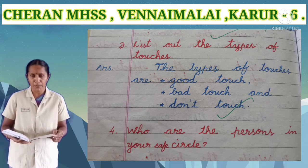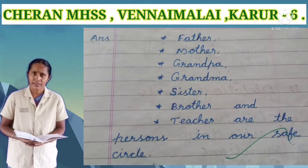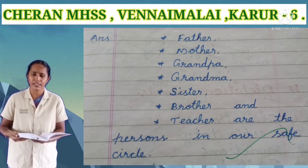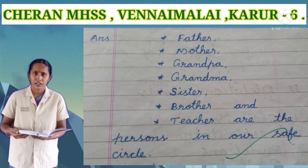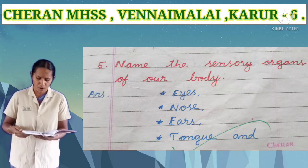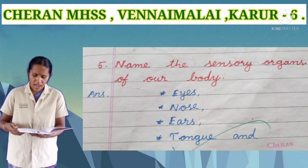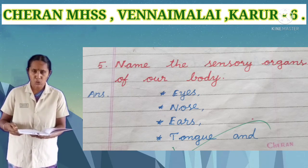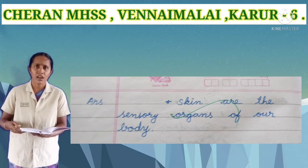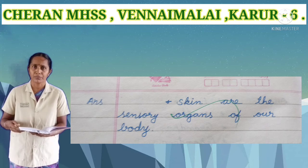Fourth one: who are the persons in your safe circle? Answer: father, mother, grandpa, grandma, sister, brother, and teacher are the persons in our safe circle. Fifth one: name the sensory organs of our body. Answer: eyes, nose, ears, tongue, and skin are the sensory organs of our body.